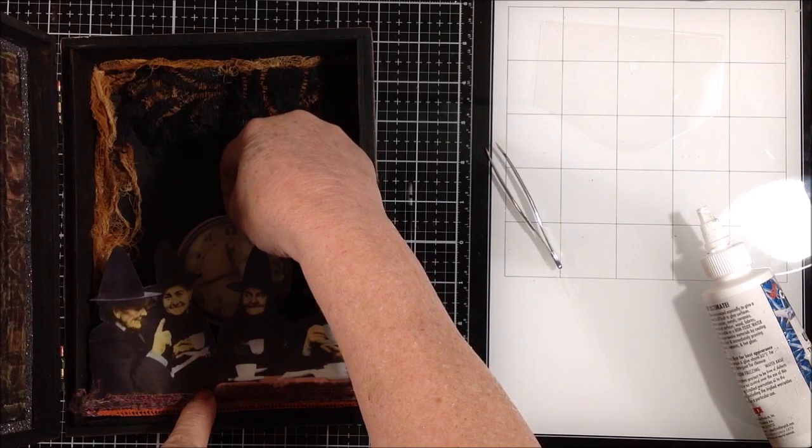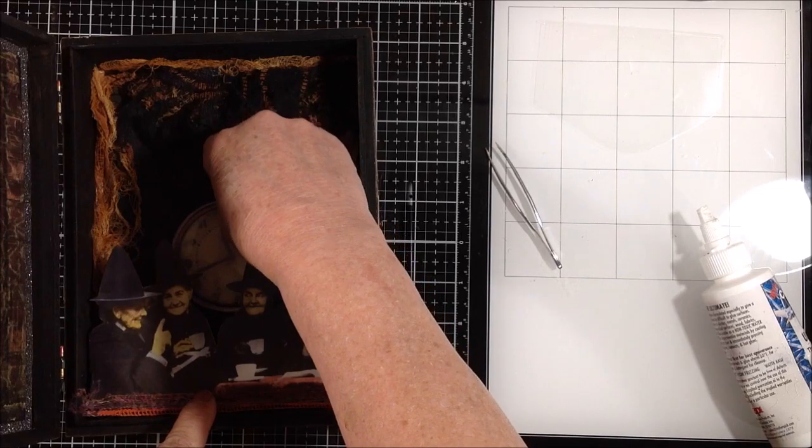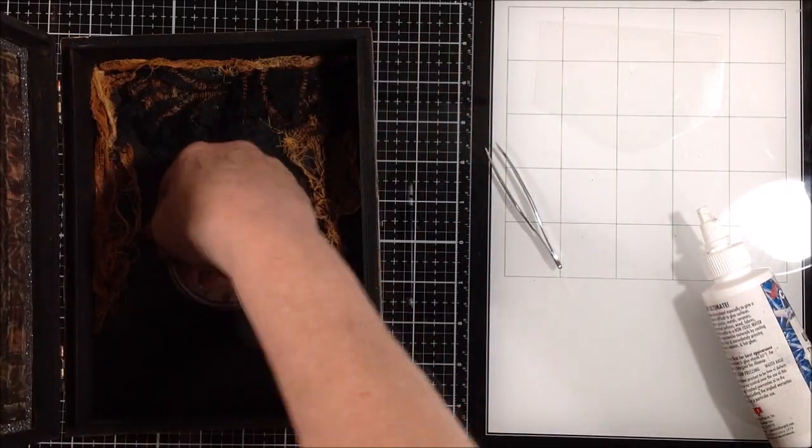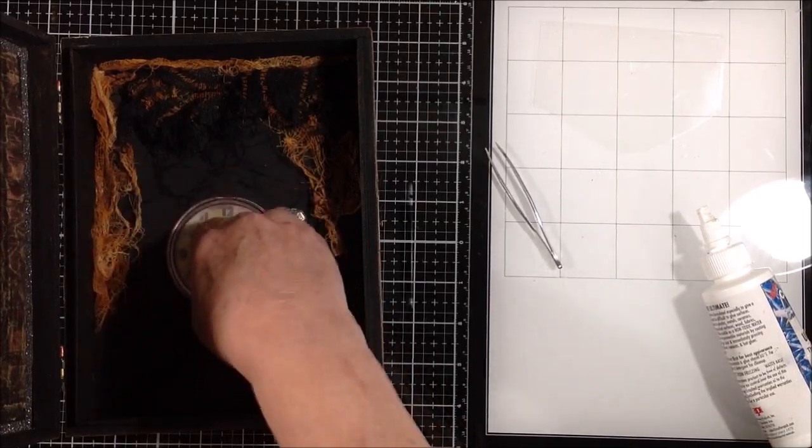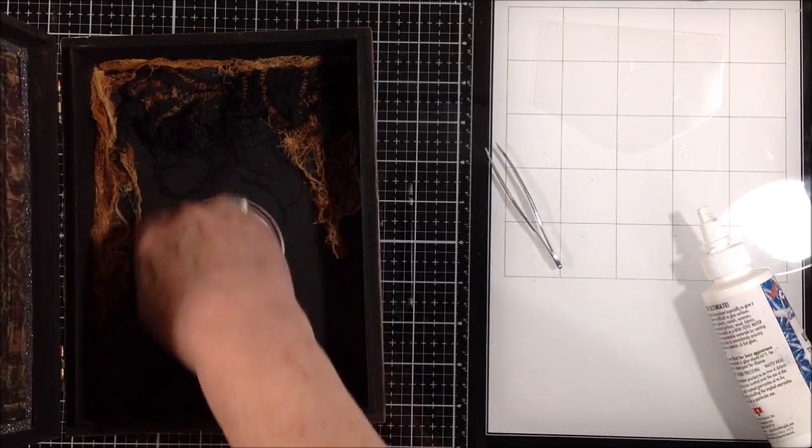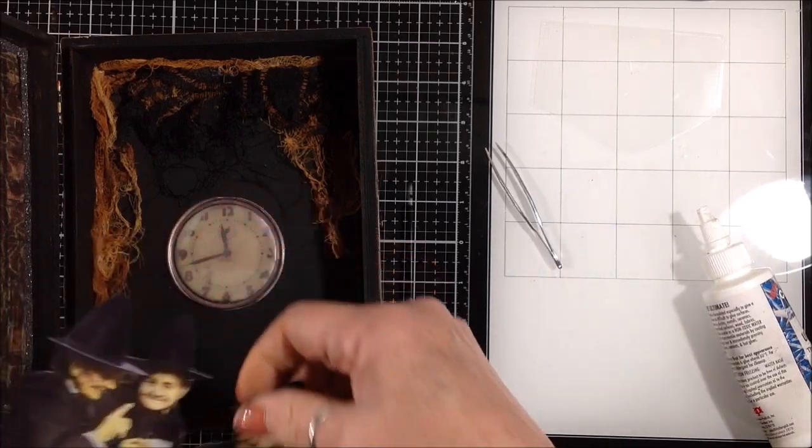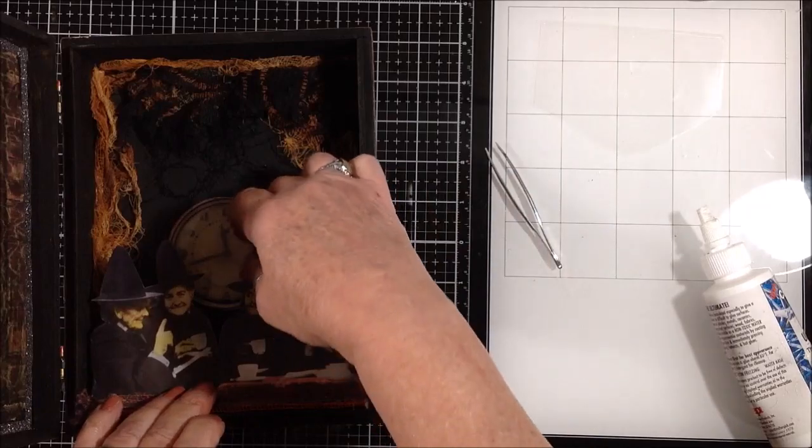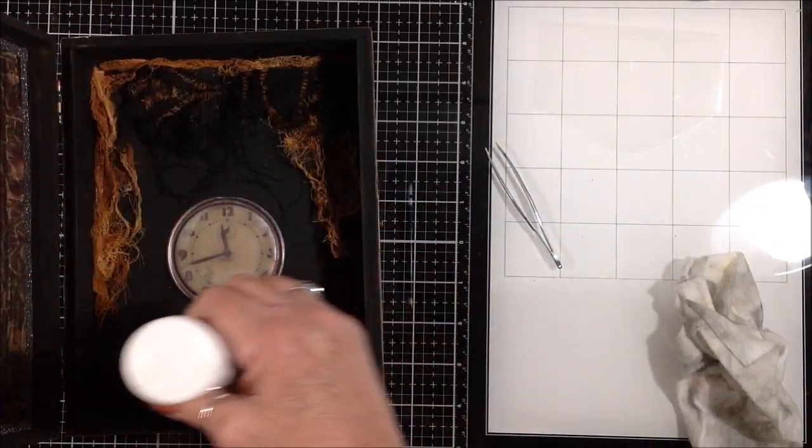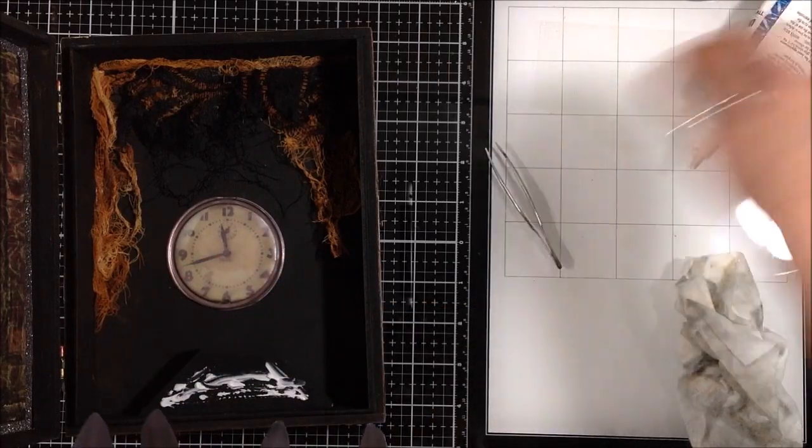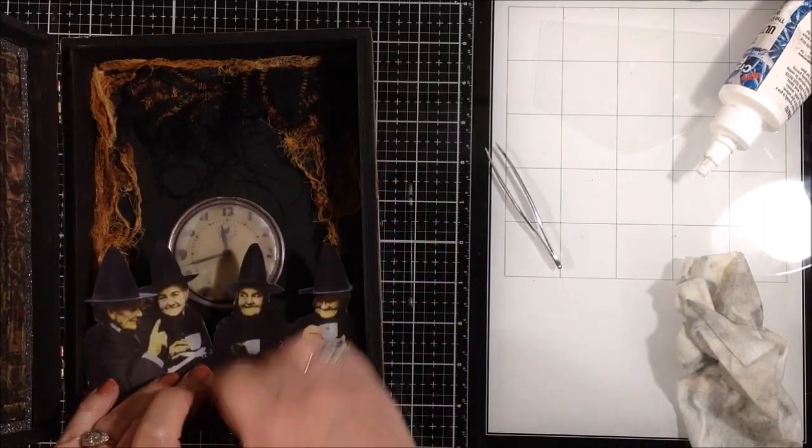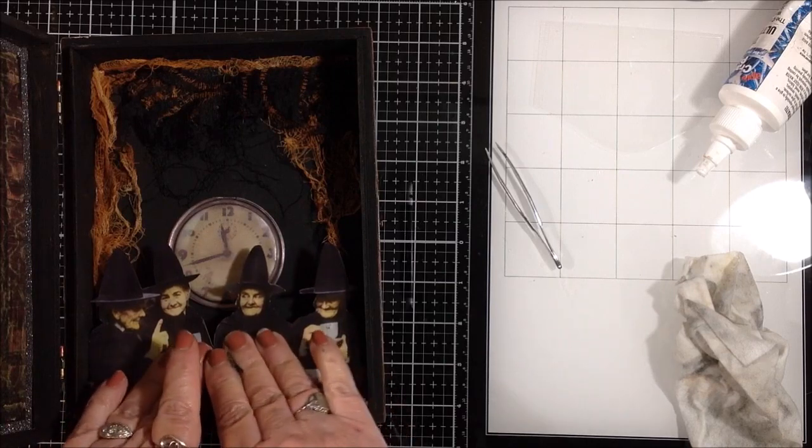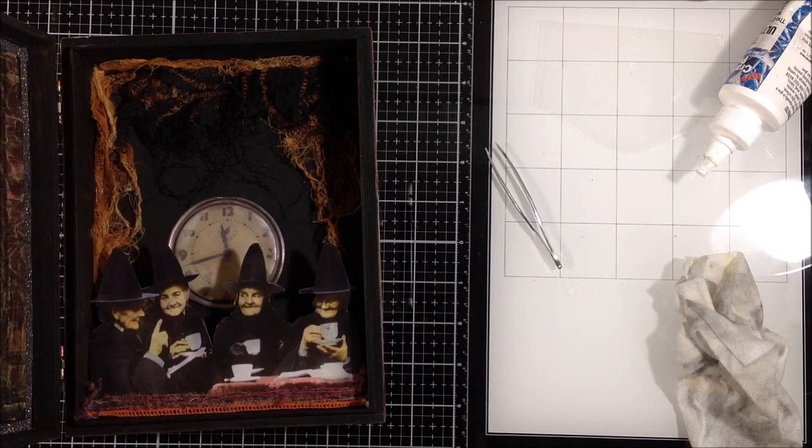Once this is down it's down, so I kind of want the time showing between these two where I have the biggest gap. So I'm going to put it right there. It's crooked. There, okay. It's got really heavy duty adhesive on the back, so should be fine. Then these girls are going to go there, so I might as well put them down. Okay, the girls are in.